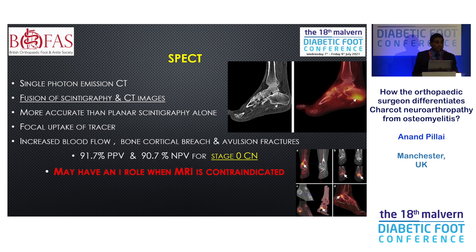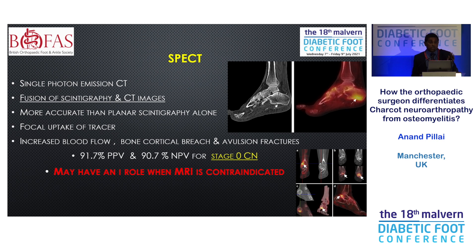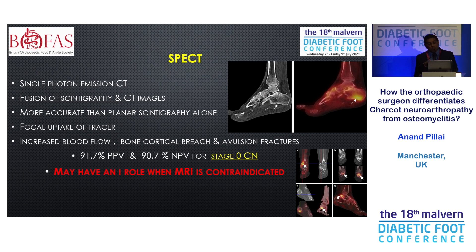SPECT CT is a very good test for stage 0 Charcot neuroarthropathy, or when you have difficulty arranging an MRI scan. Patients who have a pacemaker or claustrophobia may not be able to have MRI — a CT SPECT is quicker, kinder, and has very high specificity and sensitivity for grade 0 Charcot because it picks up trabecular microfractures.